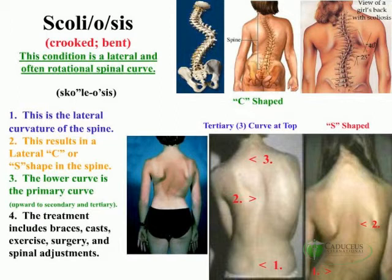Treatment includes braces, casts, exercise, surgery, vertebral adjustments, and hip adjustments to correct for leg length. A combination of these things may be necessary to correct the abnormal curvature.